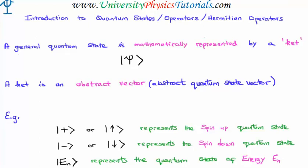Hello there. In this video I'd like to introduce to you the concept of quantum states, operators, and Hermitian operators. This video is intended to be an introduction and to lay the groundwork for future videos and future lessons. I'd like to make a definition. We're going to say that a general quantum state is mathematically represented by something we're going to refer to as a ket.